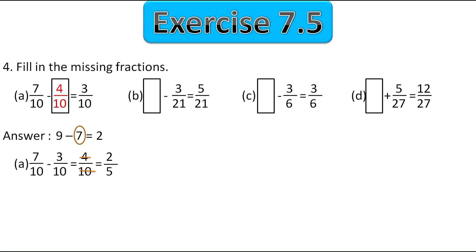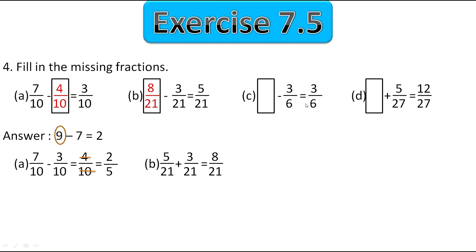In the next part we have to find the first number. If 7 plus 2 equals 9, to find the first number we add the other two values. So 5 upon 21 plus 3 upon 21 gives 8 upon 21, and that is the answer. In part C, same approach: 3 upon 6 plus 3 upon 6 gives 6 upon 6, which equals 1. We write 6 upon 6 in the answer. You can also write 1 — there is no problem — but you have to show the solution.